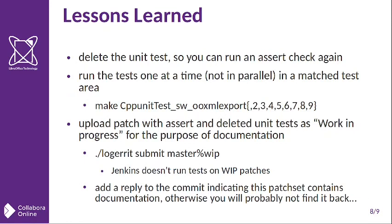Delete the unit tests that you run into so that you can run the make check again. And once you hit a match in a certain area or folder, run the tests in that folder sequentially and not in parallel. You can do that with make check with the brackets as defined there, and it will run each one one after the other, stopping if it ever hits a matching test, then you can continue from there. I've also been uploading the patch with all the asserts and the deleted unit tests as a work-in-progress patch to Gerrit, which is nice for documentation. Upload it as %WIP so it doesn't run any Jenkins tests and you're not wasting TDF infrastructure time. I also try to add a reply to the commit indicating that the patch set contains documentation, otherwise it'll probably get lost.